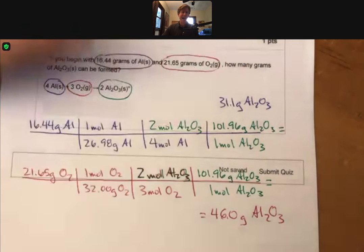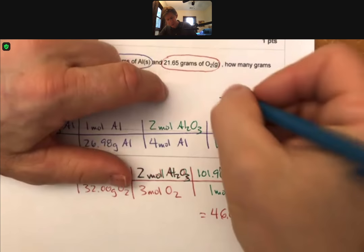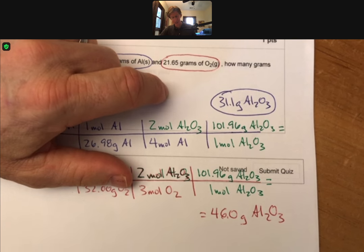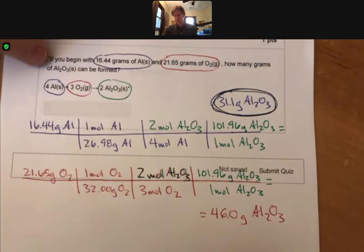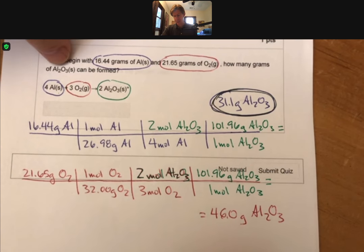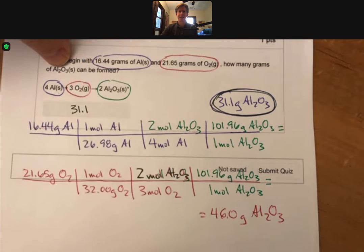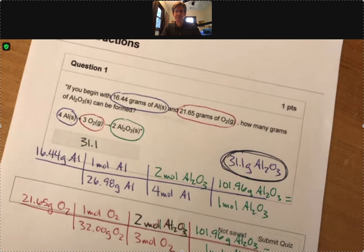Now you never add them at this point. Remember you can only make as much as until you run out of your limiting reactant. So how much can you make here? You can make 31.1 grams and you're just going to put 31.1 as the answer if you get this problem.